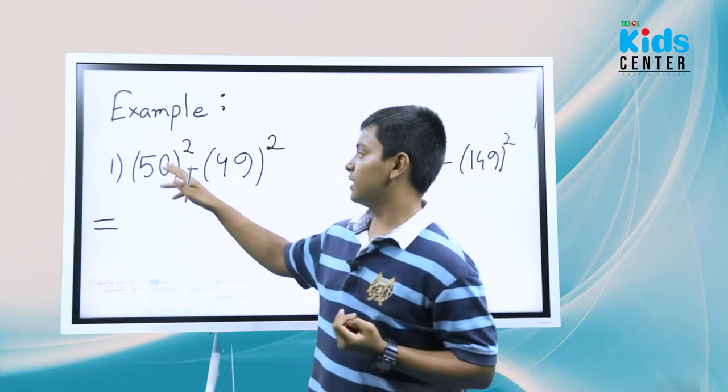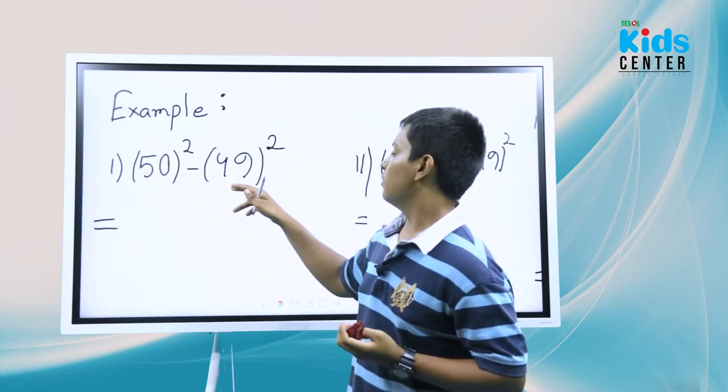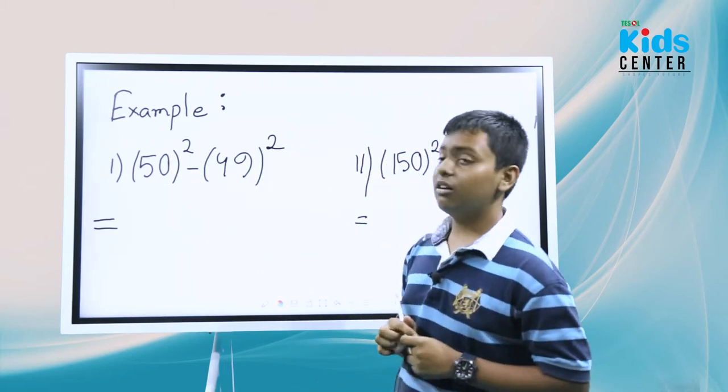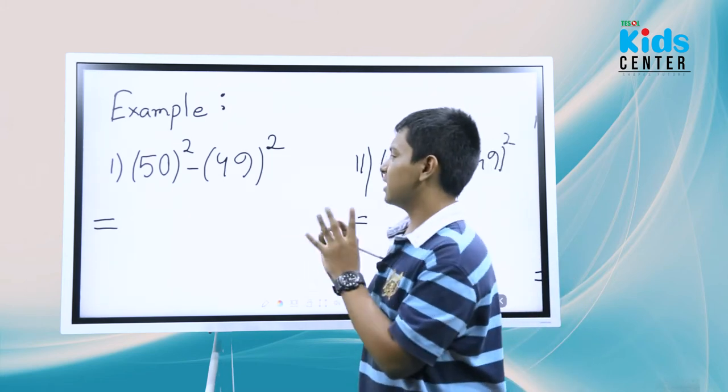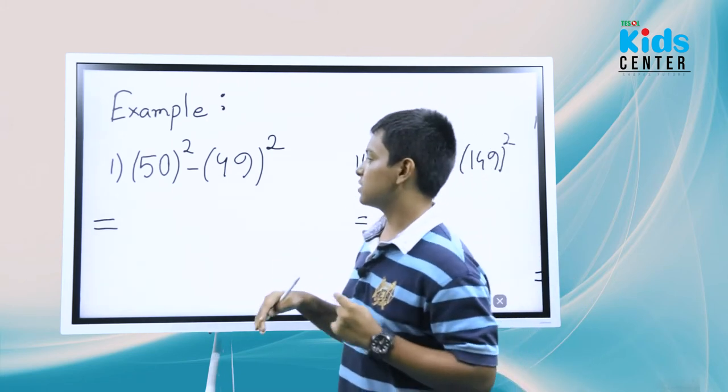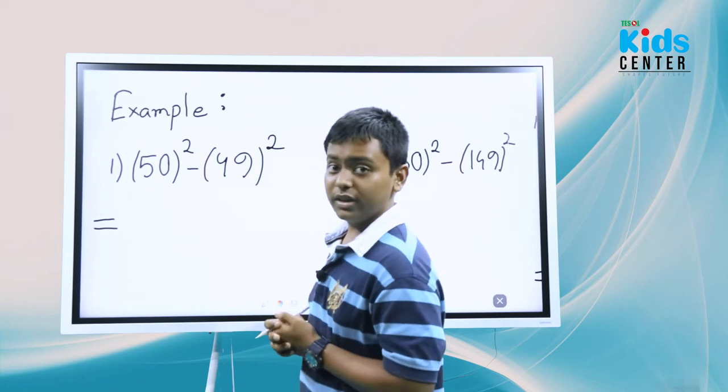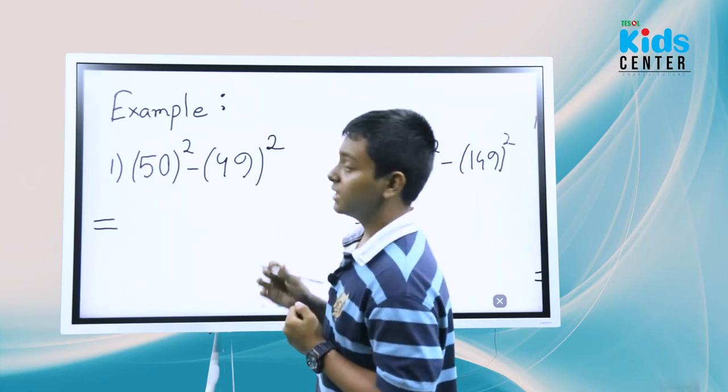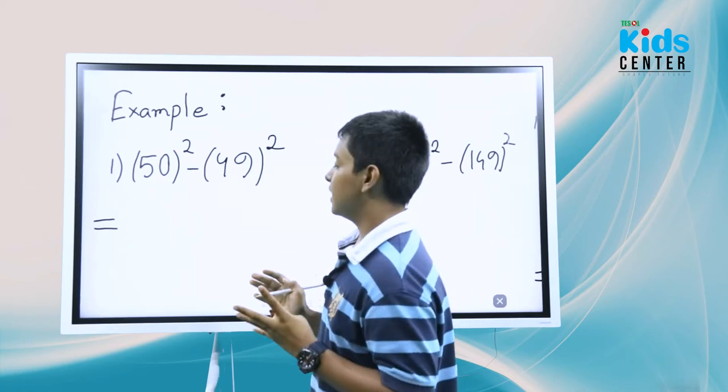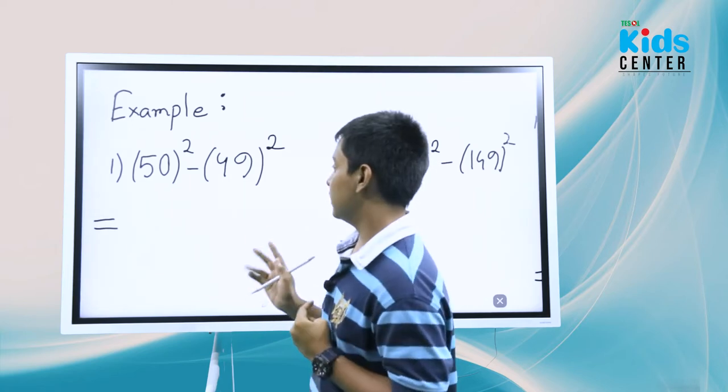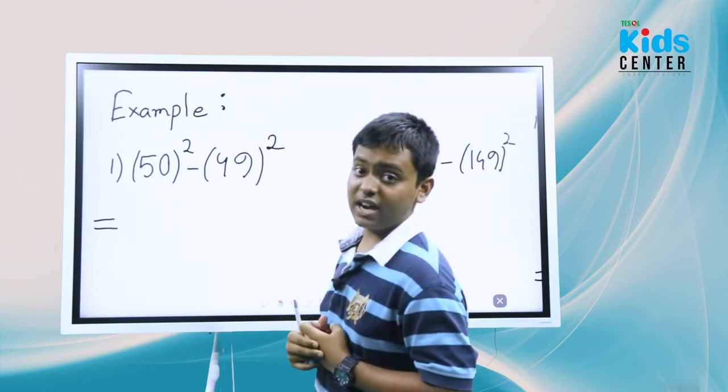Now 50 squared subtract 49 squared. How are we going to pick up this result? It's very tough. First we have to pick up 50 squared, then we have to pick up 49 squared, and it will take time. Then we have to take the subtraction of that result, so it will take so much time and effort.